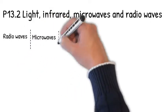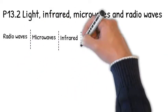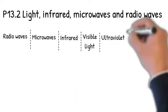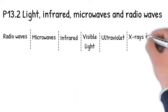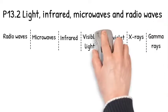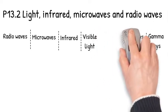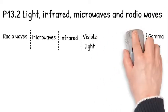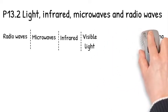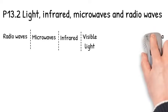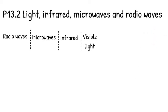In this video, we are looking at light, infrared, microwaves, and radio waves. If you remember, the electromagnetic spectrum consists of radio waves, microwaves, infrared, visible light, ultraviolet, x-rays, and gamma rays. But this time, we are only looking at the first four.